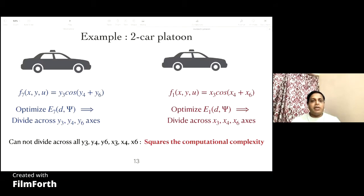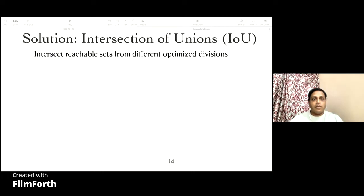This example illustrates the multi-objective optimization issue in the two-car platoon model. The function F7 is only a function of Y3, Y4, and Y6, while F1 is only a function of X3, X4, and X6. This means that to reduce linearization error along the X7 direction, we only need to divide across the Y3, Y4, and Y6 axes, while reducing error along X1 only requires dividing across X3, X4, and X6. We cannot divide across all six axes simultaneously because it would square the computational complexity.